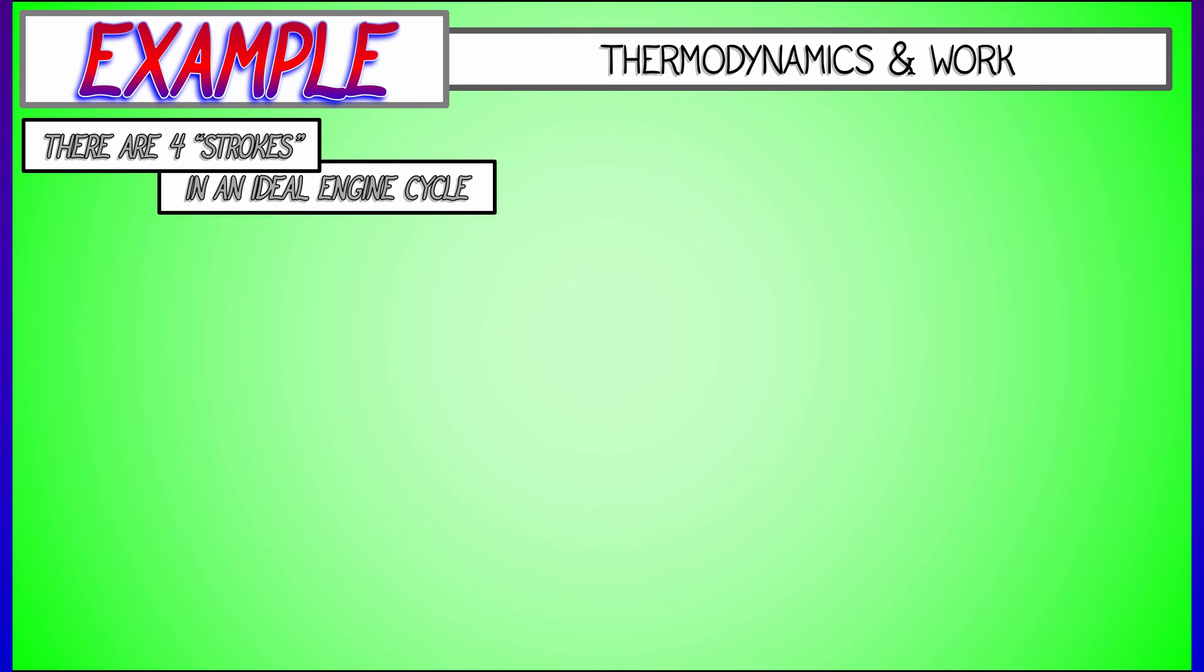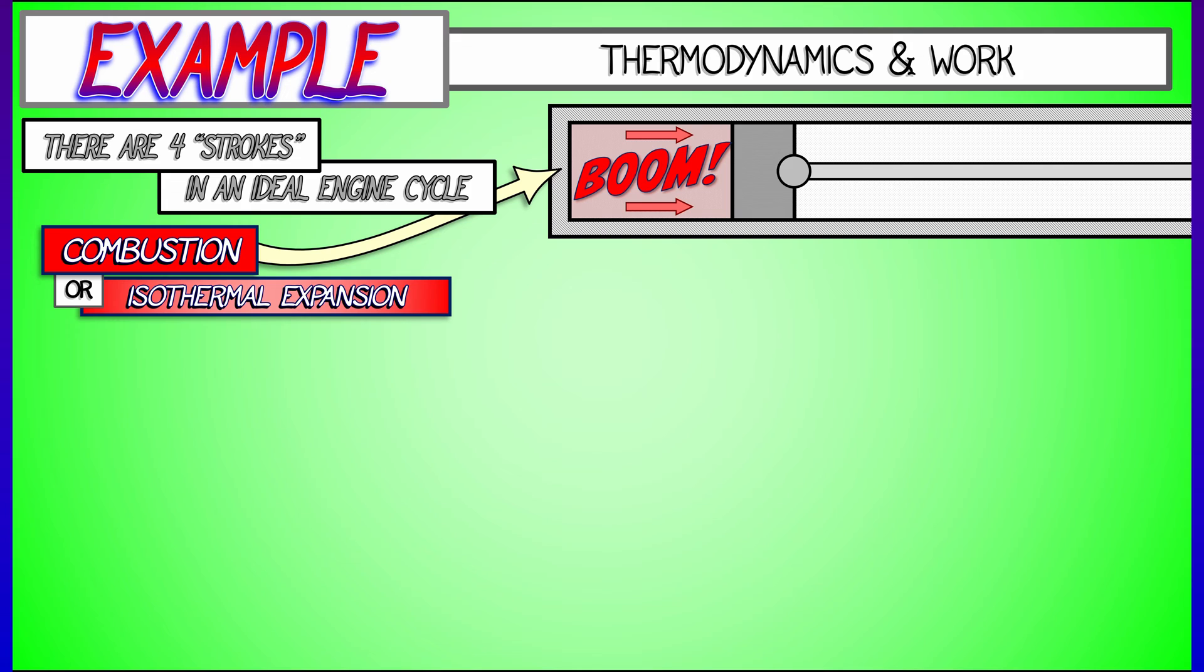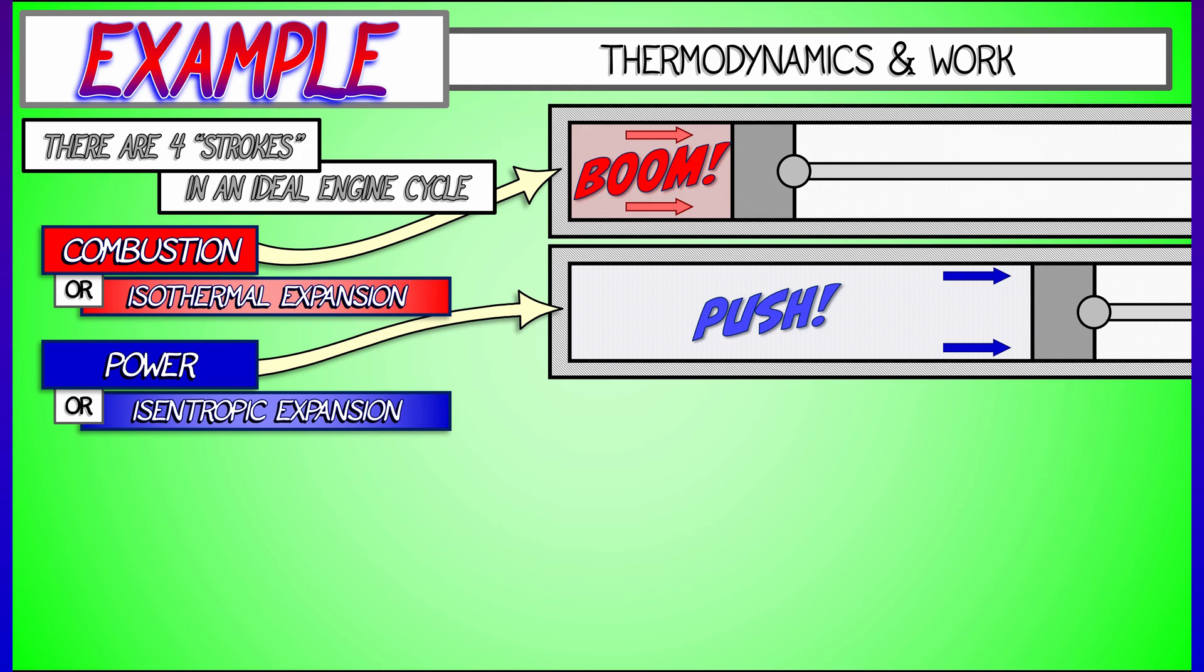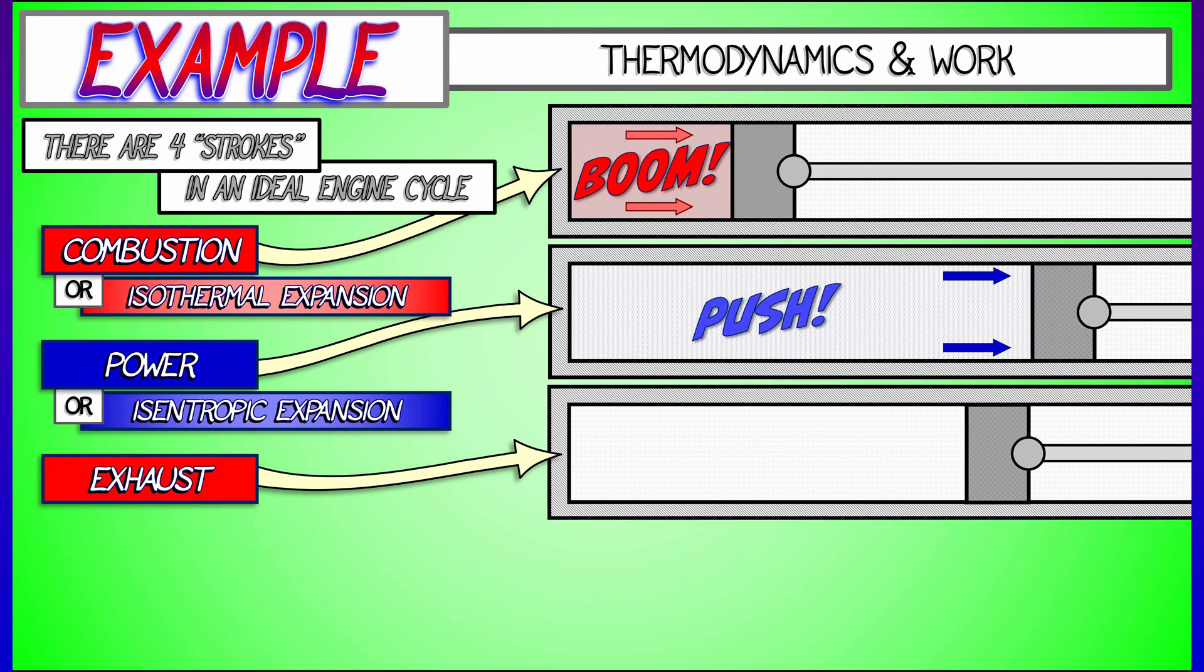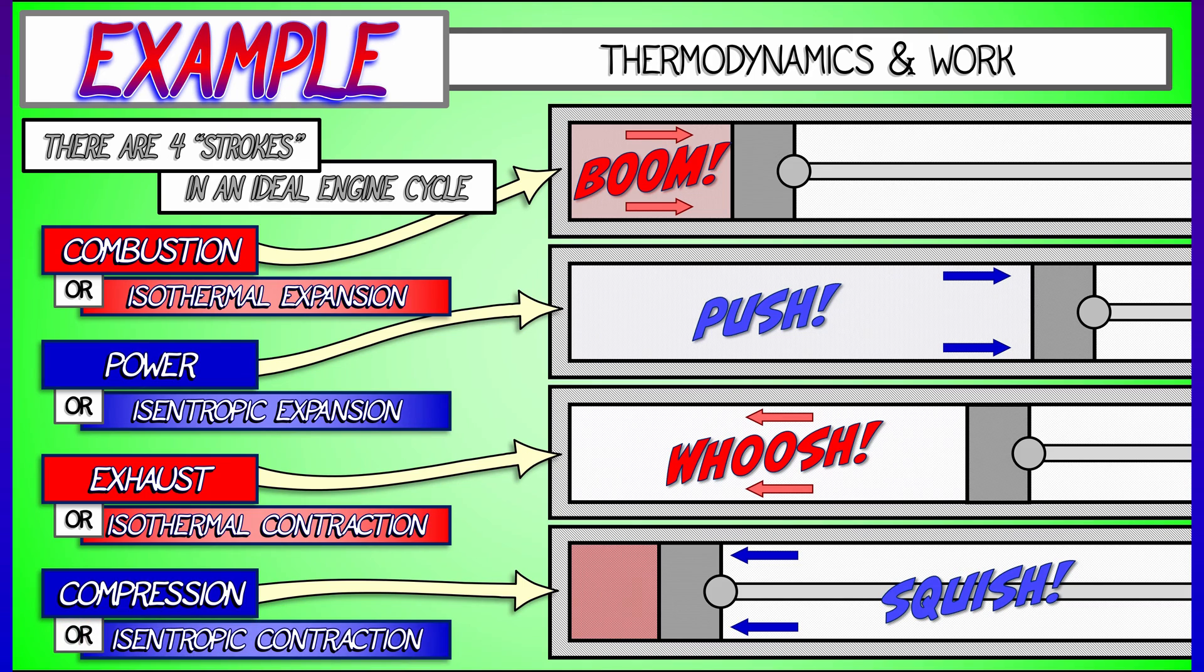There are four strokes in an ideal engine cycle. The first is the combustion stroke, otherwise known as isothermal expansion. Next is the power stroke, where the piston is being pushed out. This is also called isentropic expansion. Next comes the exhaust stroke, where the piston starts coming back in. That's isothermal contraction. And last but not least, the compression stroke or isentropic contraction.